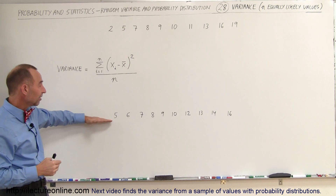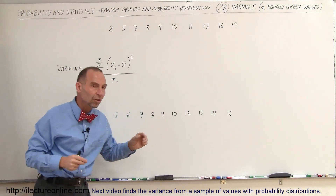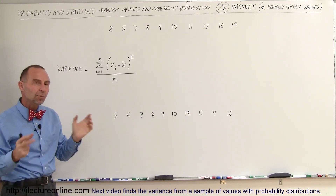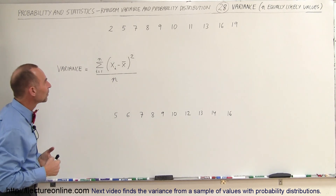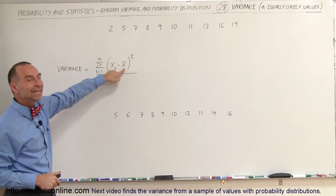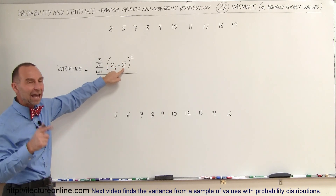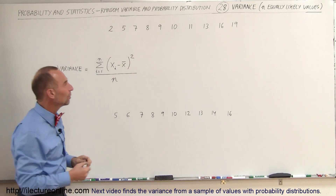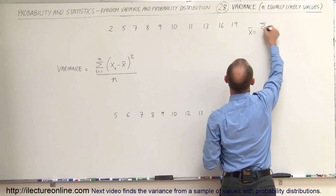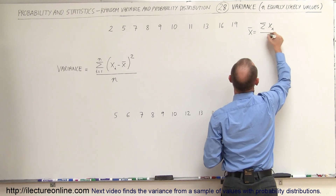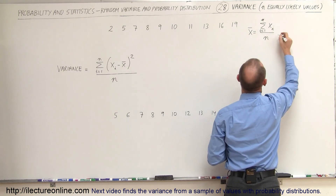For comparison I have a second set of numbers. We're also going to calculate the variance for these seven numbers so you can see how the variance will be different for the two sets and what that implies. First of all we need to find the average or the mean — X with a bar on top means the average value. The average is equal to the sum of all values divided by the total number, from I equals 1 to N.